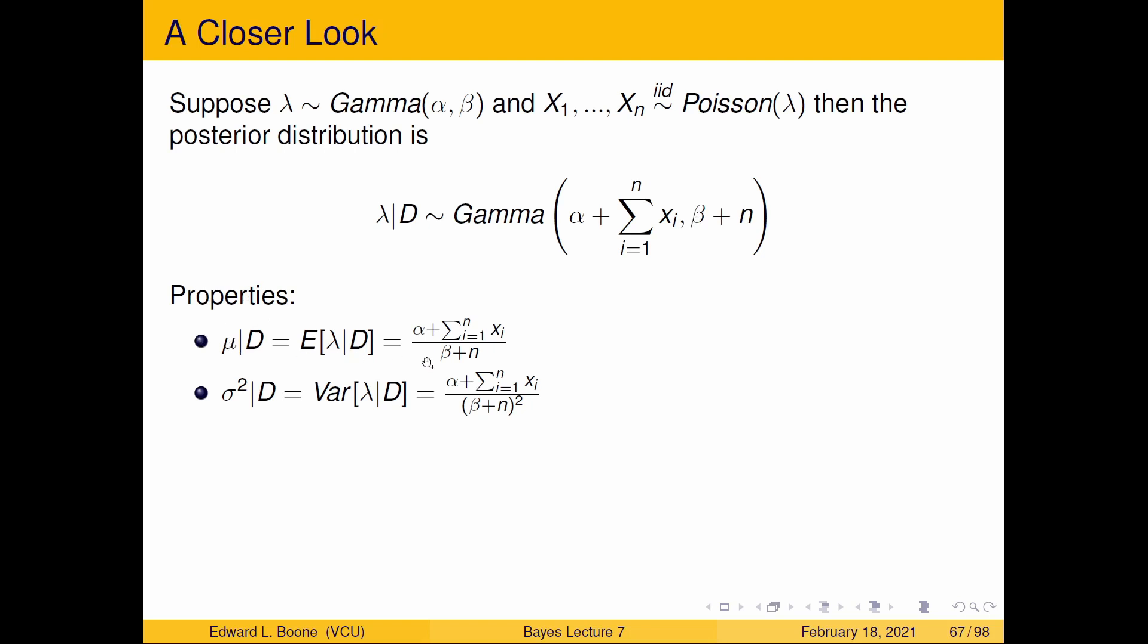So μ here is the posterior mean, and we want to look at this a little bit closer and see how the posterior mean is influenced by the prior information and the data.